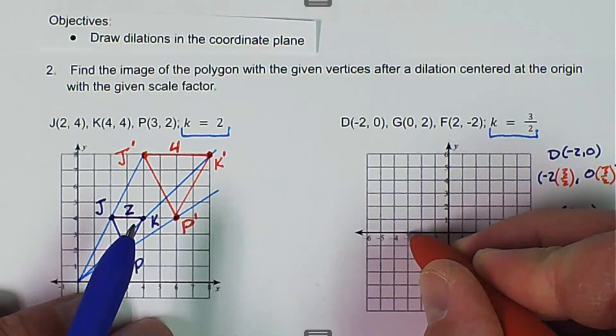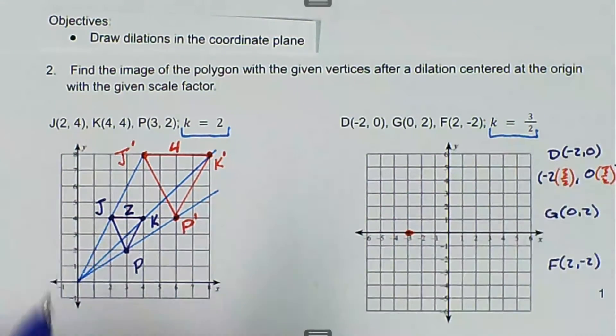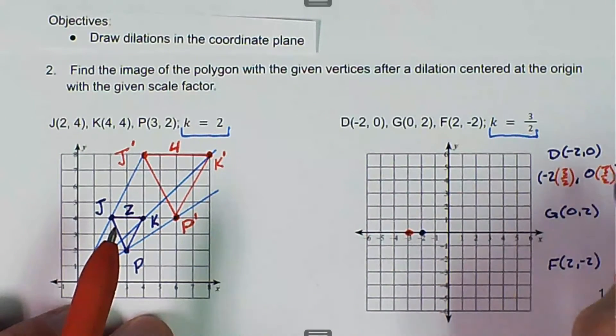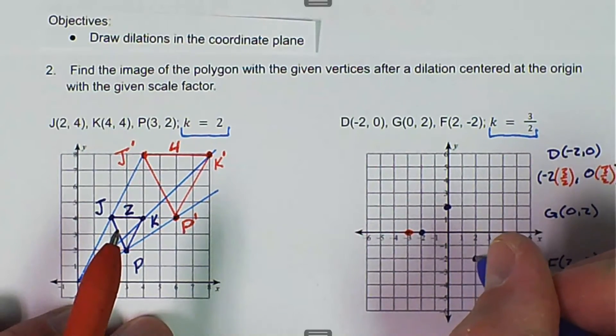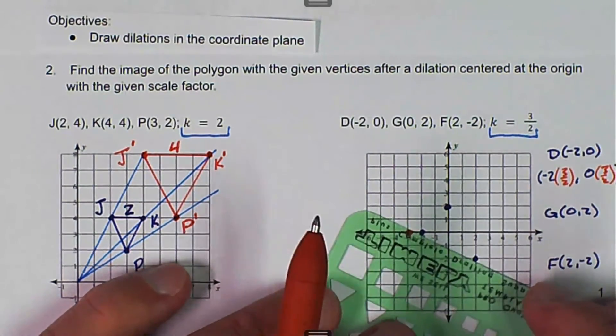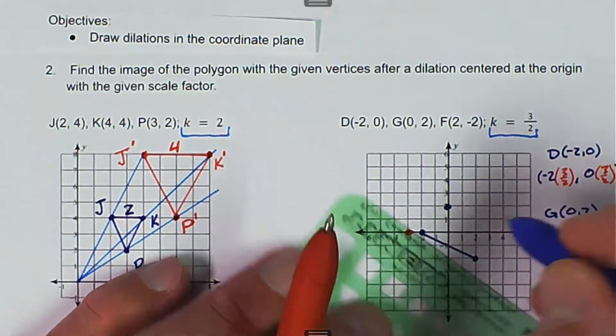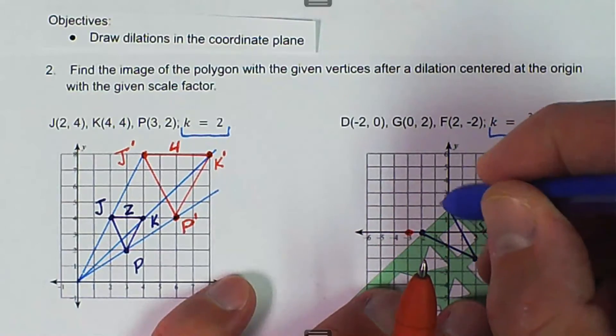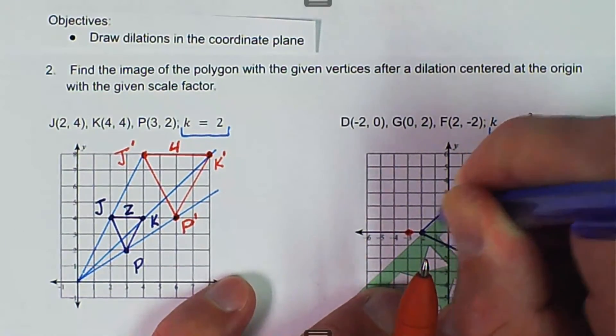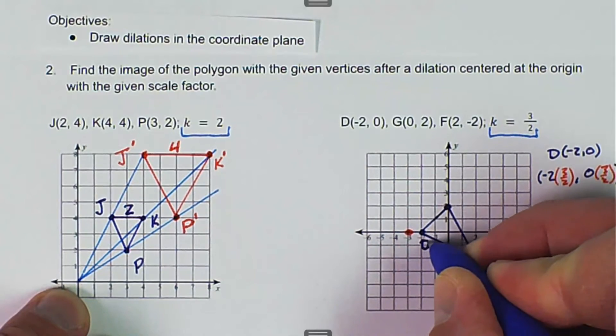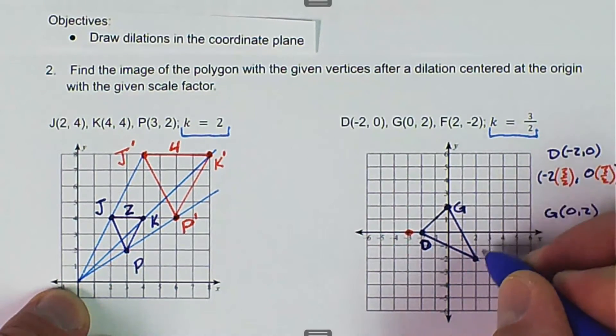So negative 3, 0. I guess we should have drawn a preimage first. So negative 2, 0. 0, 2. And F is 2, negative 2. So this one was D. This one was G. And this one was F.